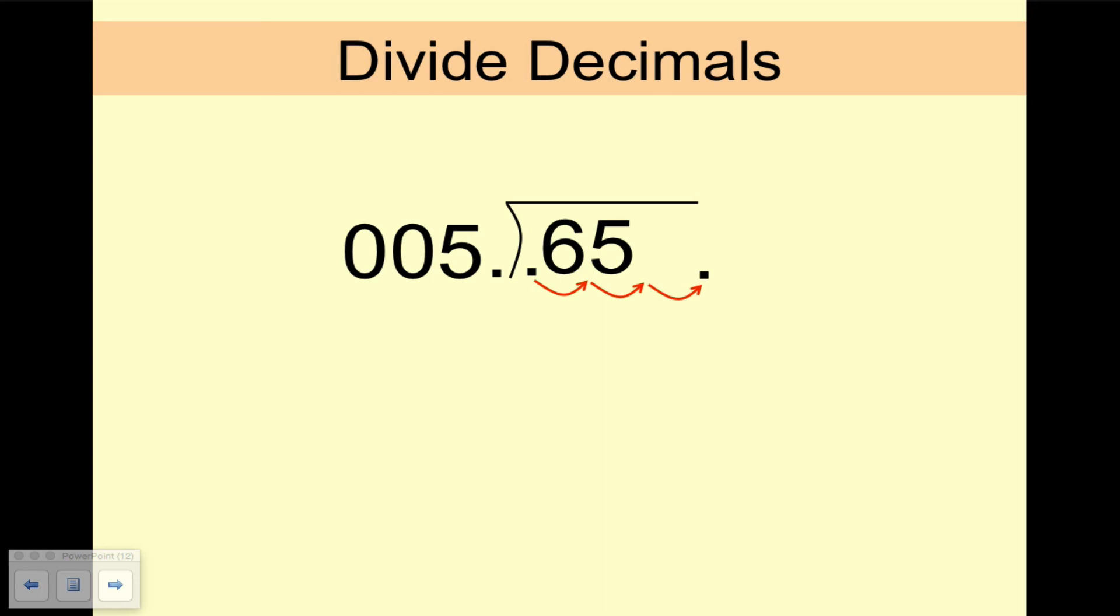1, 2, 3. And notice there's, I call this a carton. We're going to put an egg in the carton. And so it's essentially 650 divided by 5.